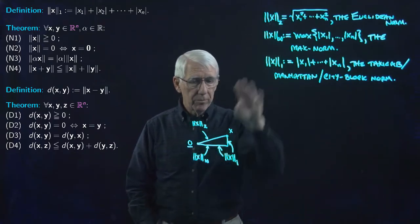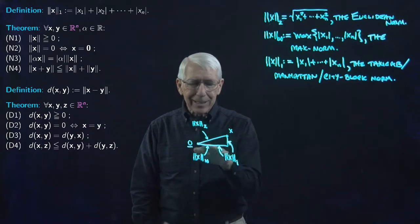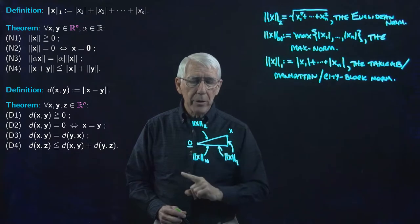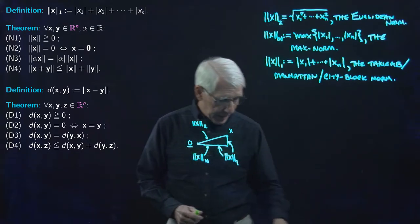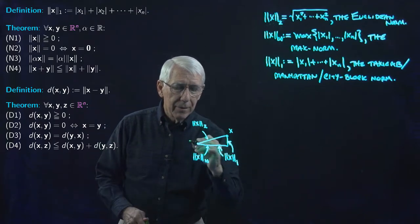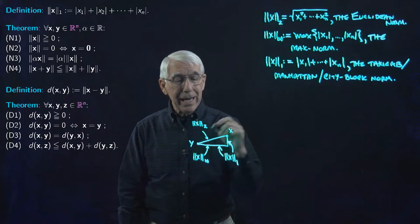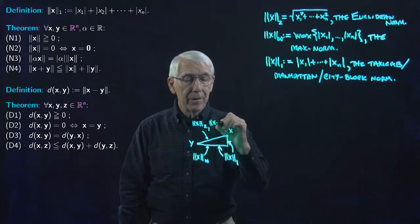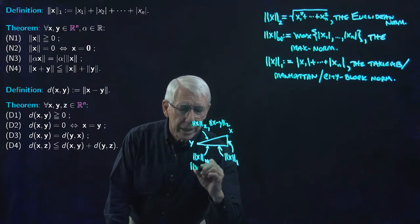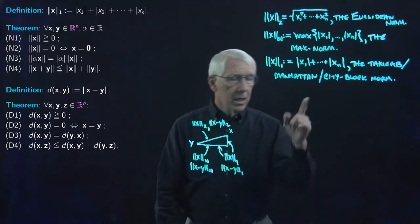Now we can see how the three norms compare. Each one is defined geometrically by something involving the right triangle formed by x and the origin. And this works the same if instead of the zero vector we use any vector y. The distance between x and y is the Euclidean norm of x minus y, the max norm of x minus y, or the city block norm of x minus y — depending on which norm we use.